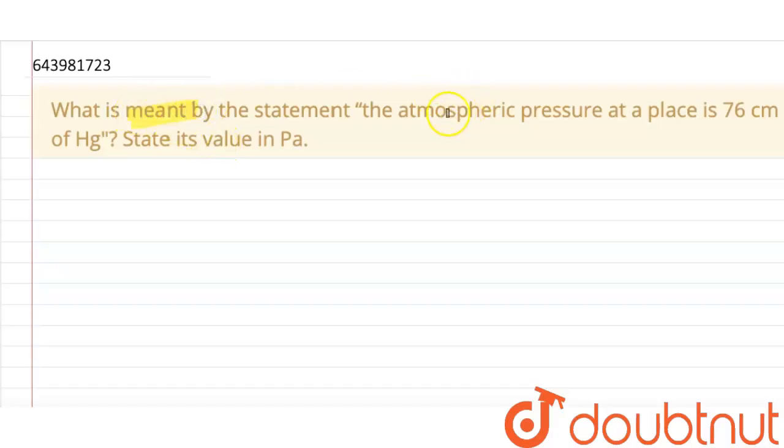What is meant by the statement atmospheric pressure at a place is 76 centimeter of Hg or 76 centimeter of mercury? State its value in Pascal. So what do you mean when we say atmospheric pressure is 76 centimeter of mercury?